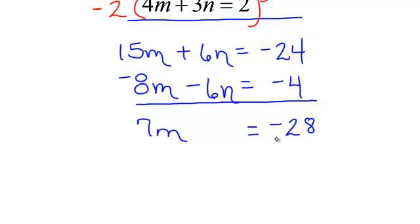Negative 24 and negative 4 will be negative 28. We are down to just a simple equation. Divide both sides by 7. m is negative 4.